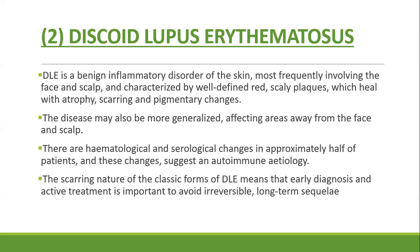The second disease is discoid lupus erythematosus (DLE), a common cause of cicatricial alopecia of the scalp. It is a benign inflammatory disorder of skin most frequently involving the face or scalp, characterized by well-defined red scaly plaques which heal with atrophy, scarring, and pigmentary changes. Disease can be generalized — disseminated DLE — affecting areas away from the face and scalp. Hematological and serological changes occur in approximately half of patients, suggesting an autoimmune etiology.